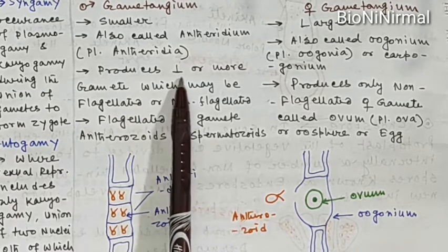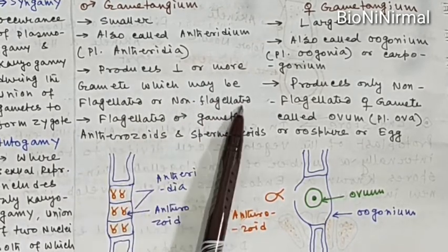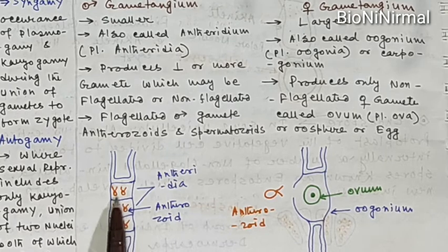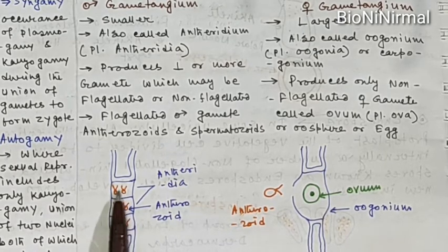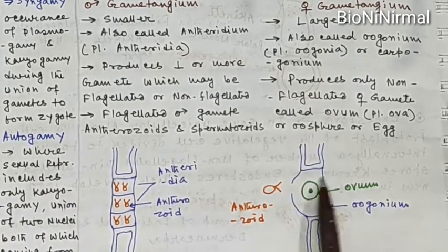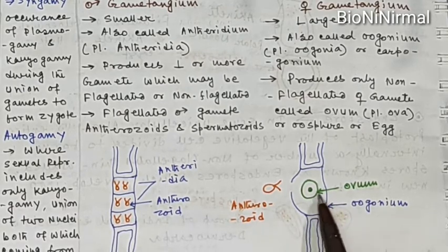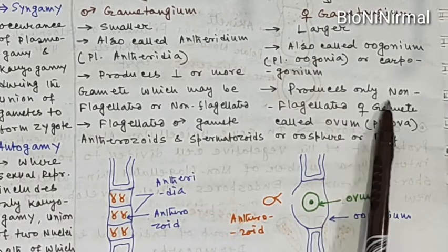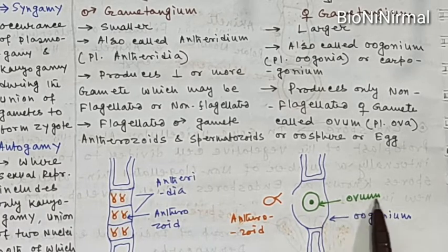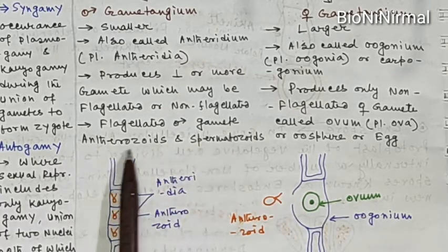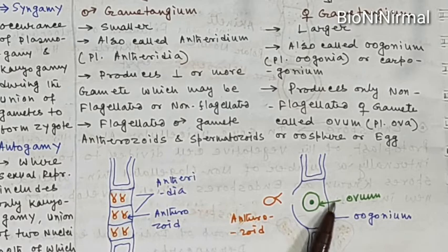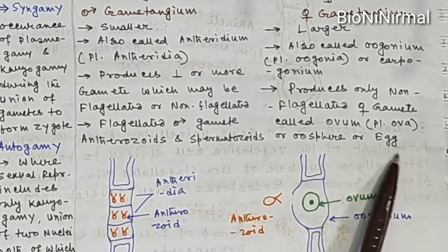Male gametangia produce one or more gametes which may be flagellated or non-flagellated — that is, the male gametes may be motile or non-motile. Female gametangia produce only one gamete, and female gametangia produce only non-flagellated female gametes called the ovum. Flagellated male gametes are called antherozoids or spermatozoids, and the non-flagellated female gamete is called the ovum, oospore, or egg.